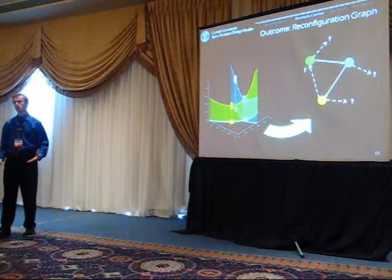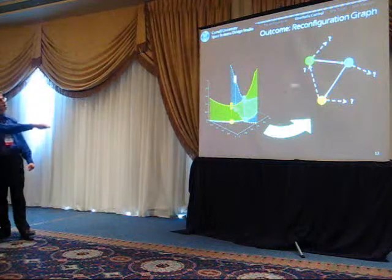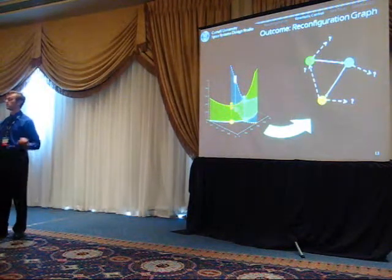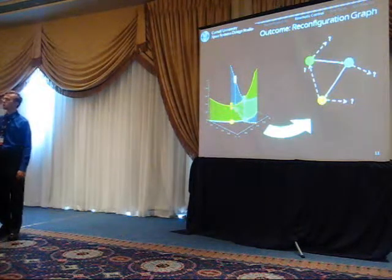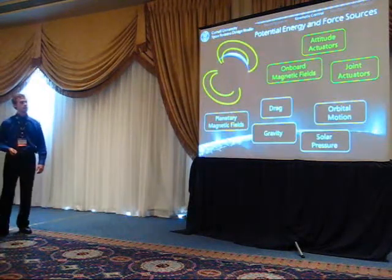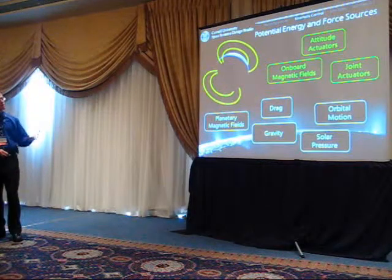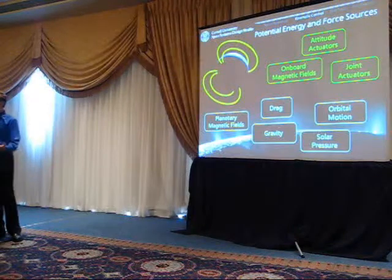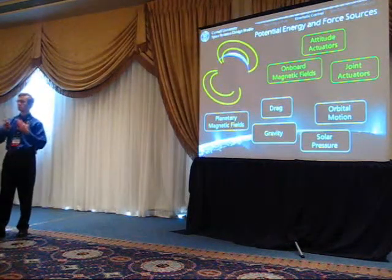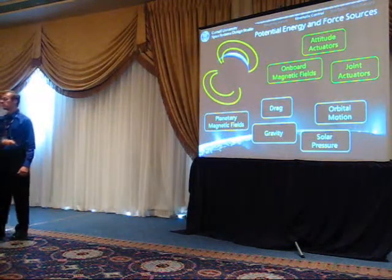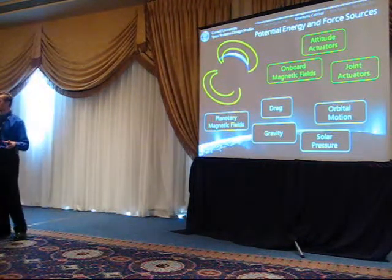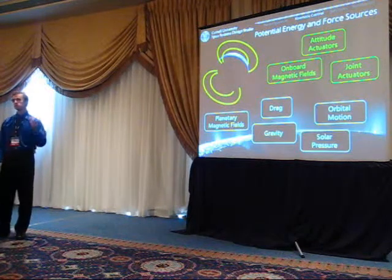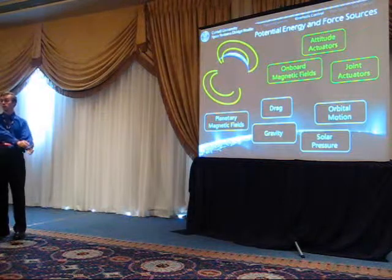The question is: can we explore this graph? We do it through simulation to identify what configurations we can get to, whether there are ways to loop back to previous configurations, and whether we can pick any possible configuration and get to it. As for where the forces driving this reconfiguration come from — you can generate them on the spacecraft via attitude actuators, joint actuators, or onboard magnetic fields, which I like because they express things in a potential energy framework. But there are also ambient forces in the space environment — gravity gradient, atmospheric drag, solar pressure — that could drive reconfigurations without any power expenditure. All we do is set the kinematics and let it go, then when it reaches the new equilibrium we set new kinematics and let it go again.